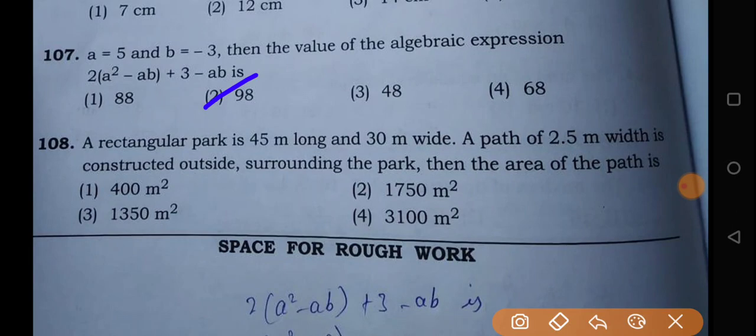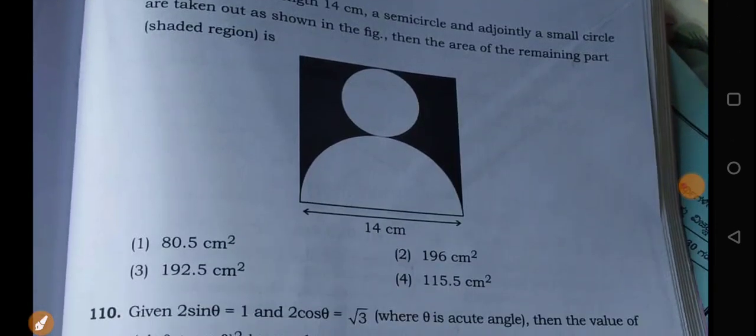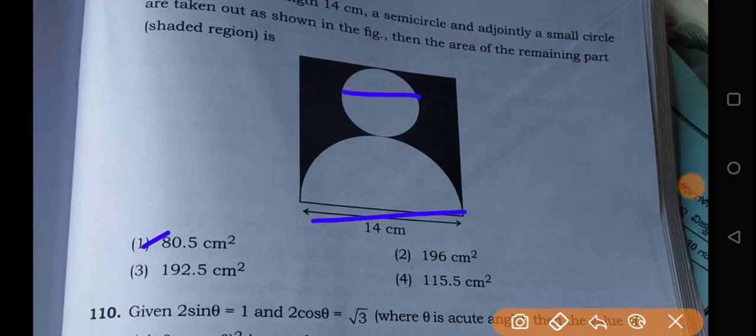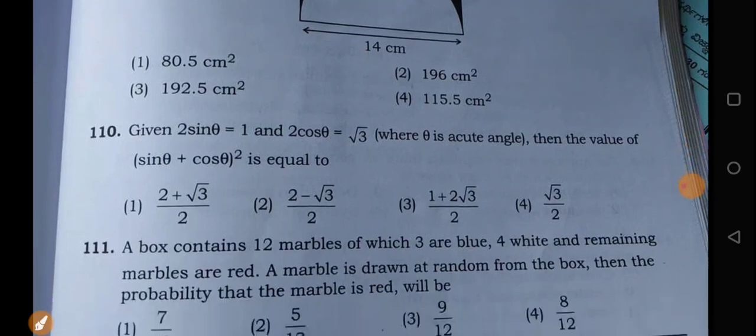And after that, the area of the path is 400 m2. I hope it is easy for all of you. Similarly, here, you subtract half of this diameter. So, the answer is 80.5.